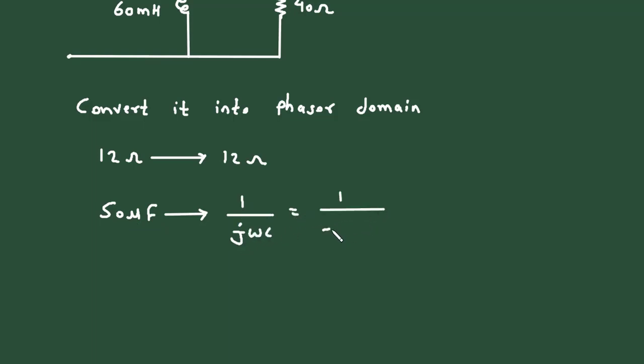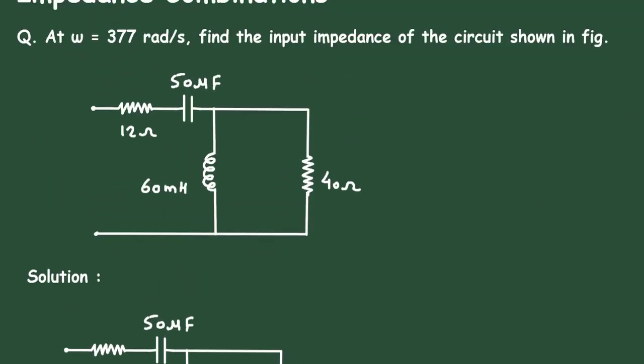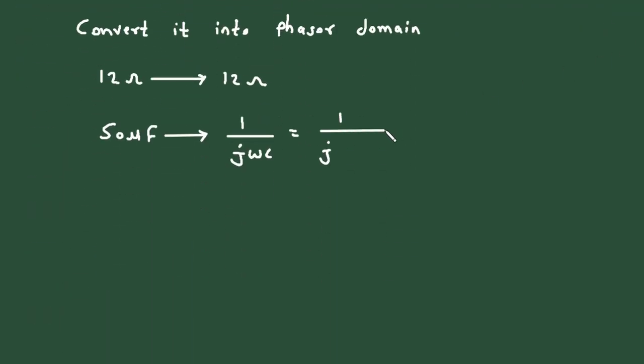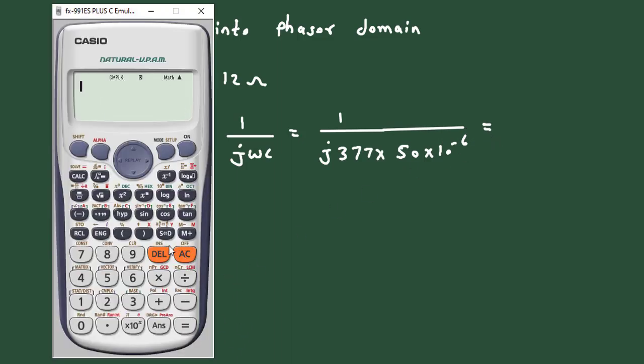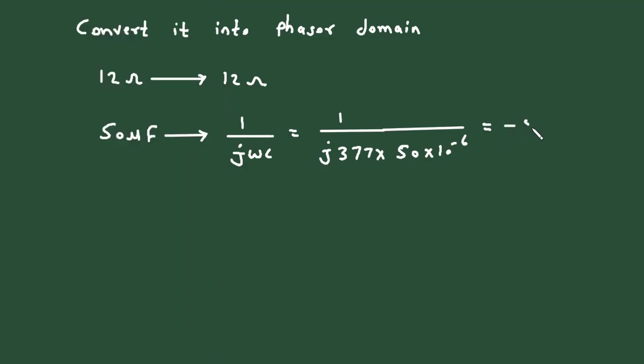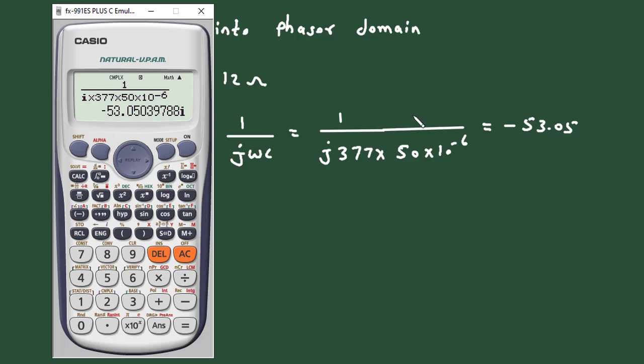So 1 upon j into the value of omega is given, it is 377. So 377 multiplied with capacitance value is 50 into 10 to the power minus 6. It is equal to 1 upon j into 377 into 50 into 10 to the power minus 6. So it is minus 53.05 j.